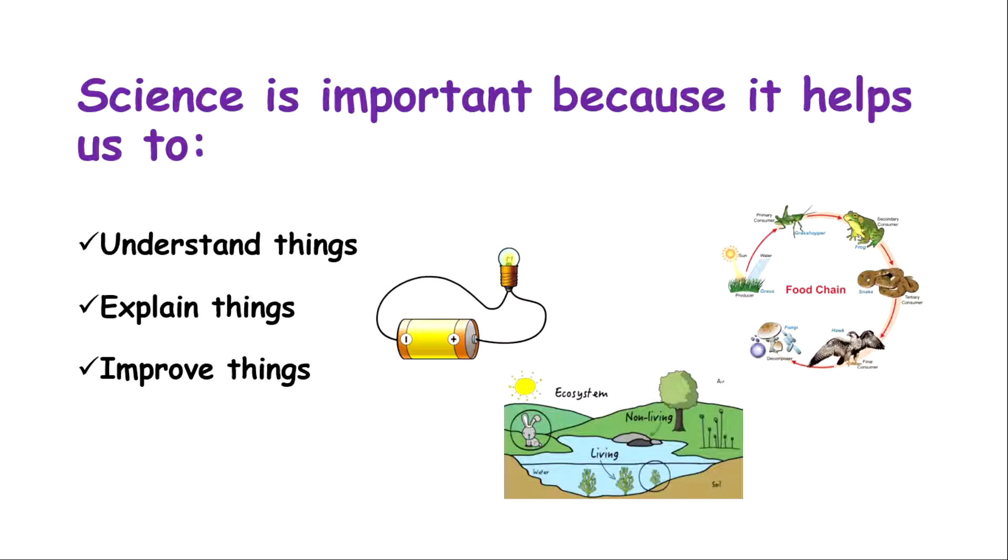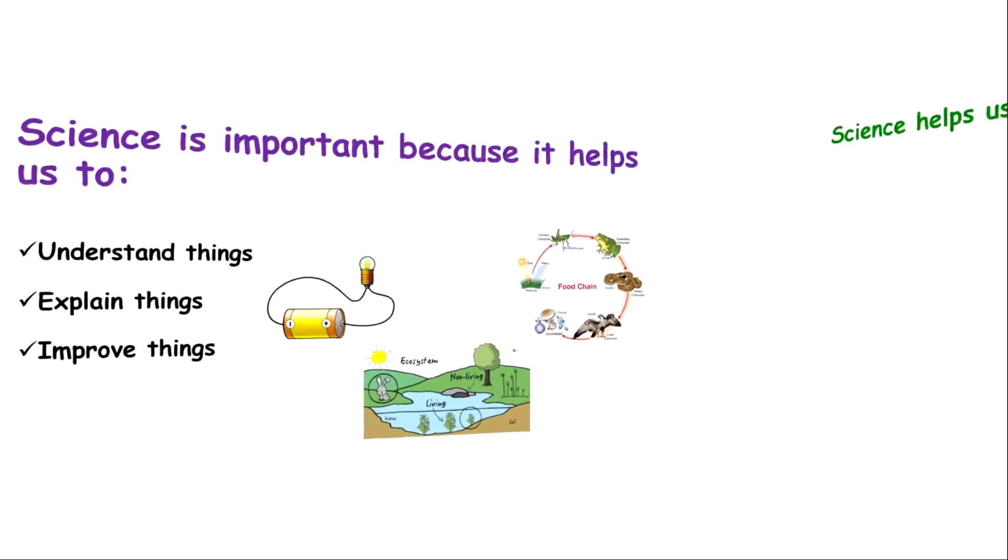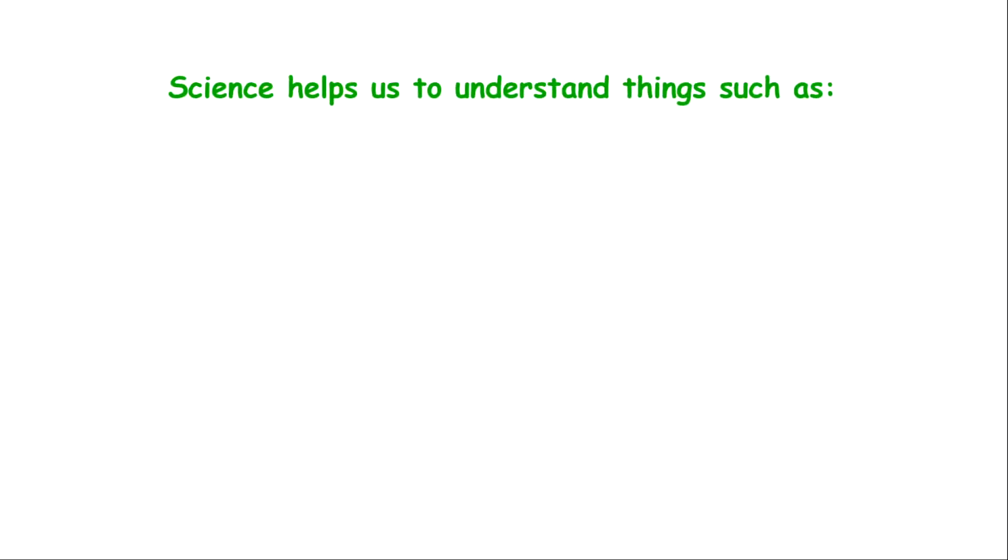The three main reasons why science is important is because science helps us to understand things, science helps us to explain things, and science also improves things. All the importance of science will be anchored on any or all of these three things.